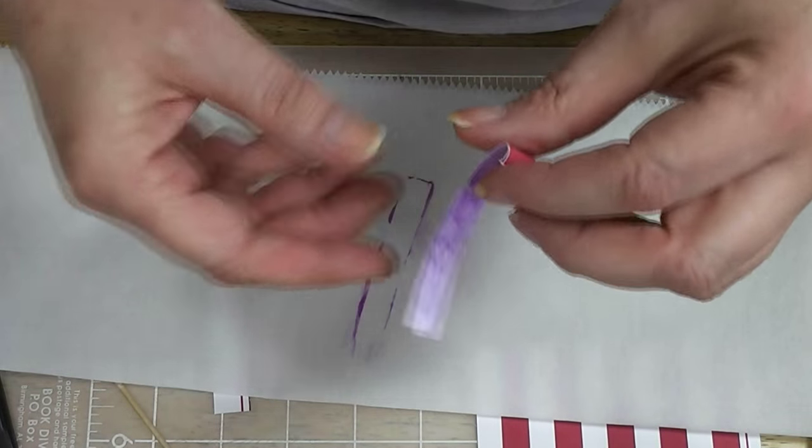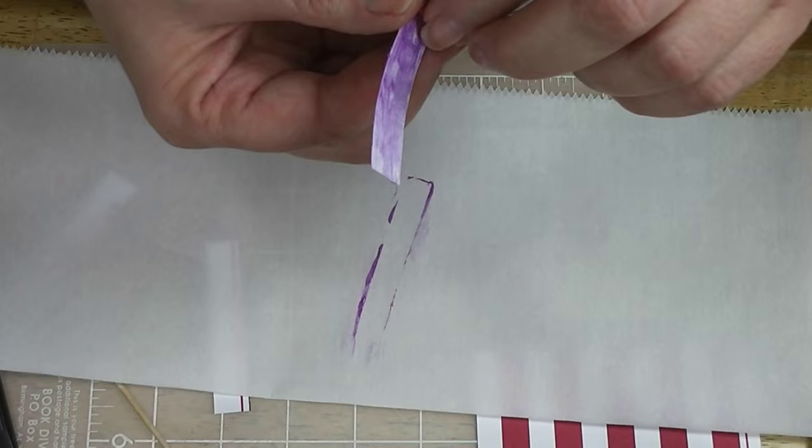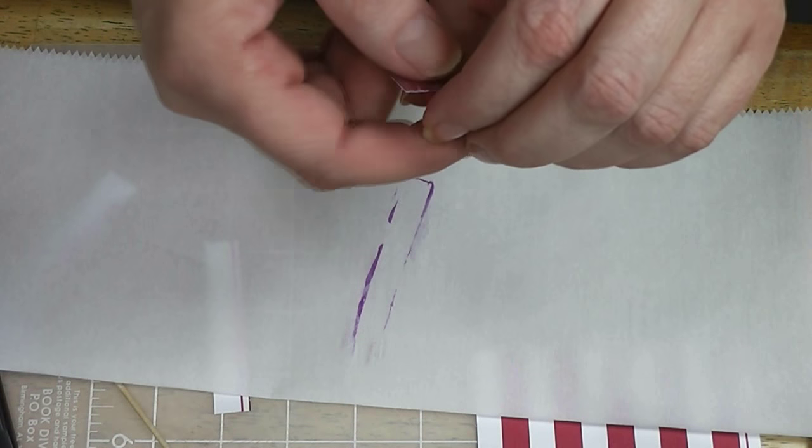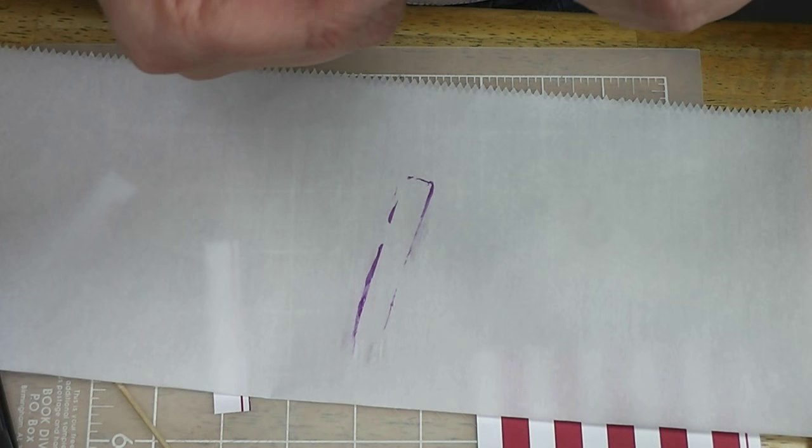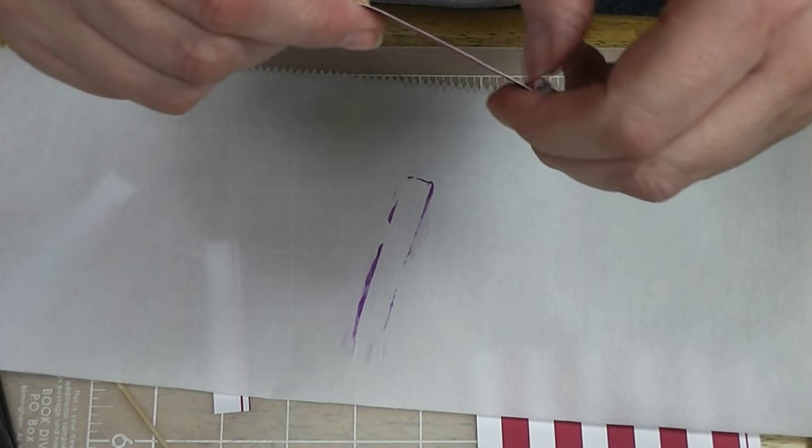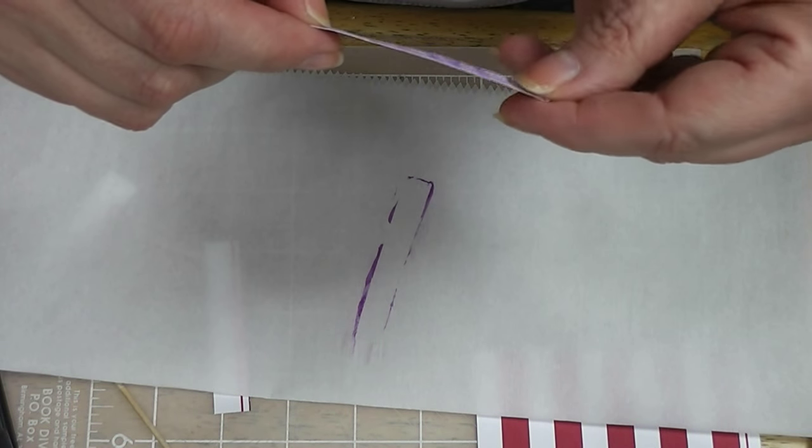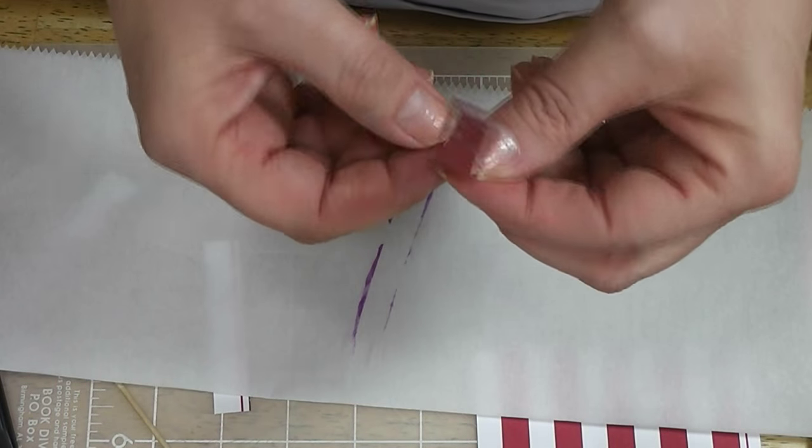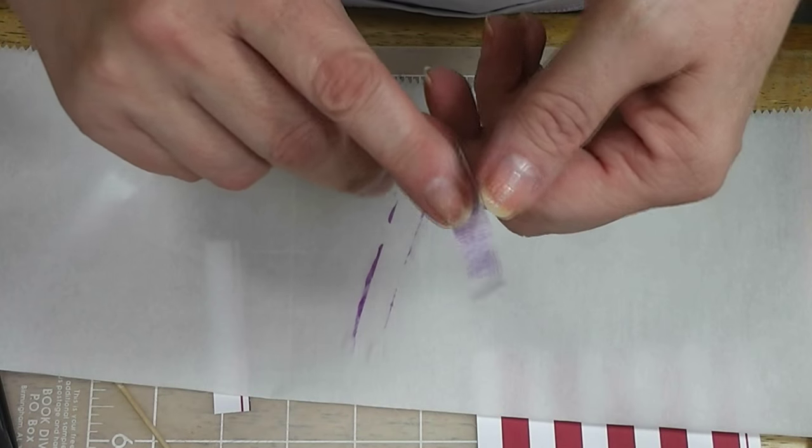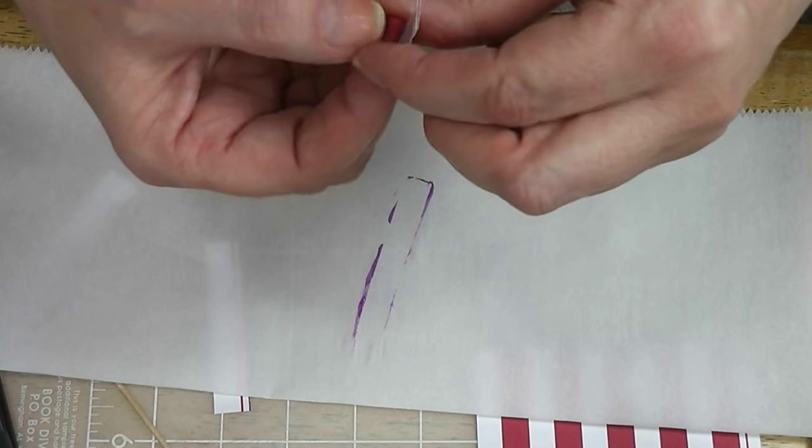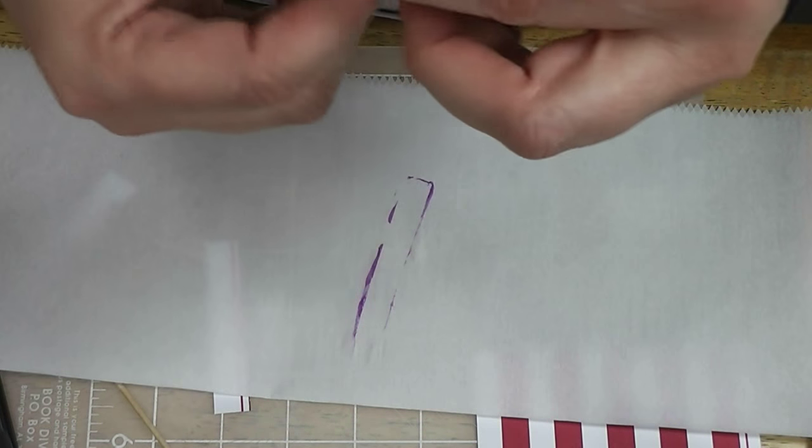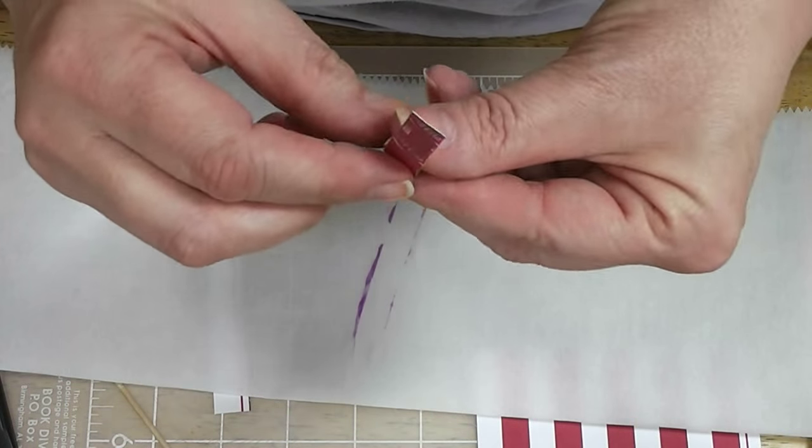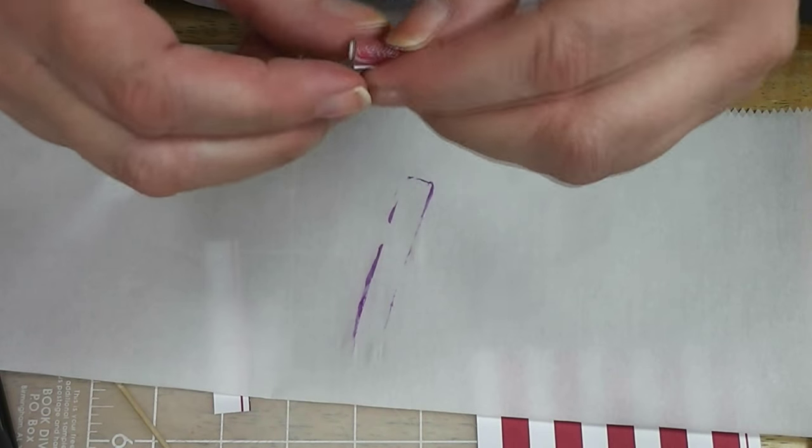You could use Elmer's glue or tacky glue or something with this if you wanted. Now, we're just going to roll these up. And we're going to have to kind of guess. The first one is always a little trickier until you figure out, like I didn't get this tight enough. This is why a lot of people only put glue on the very end. I like to glue the whole thing, I think it comes out better.